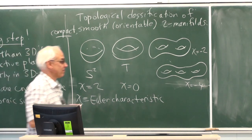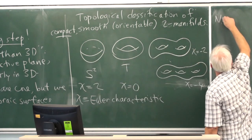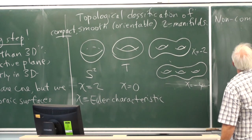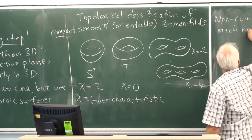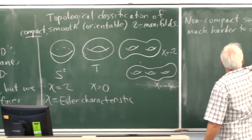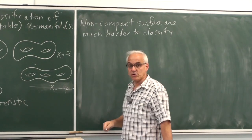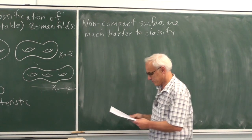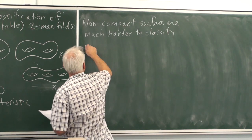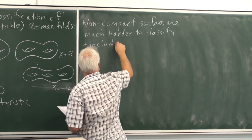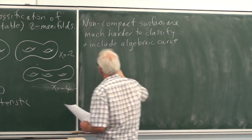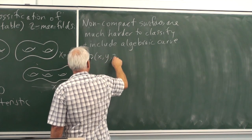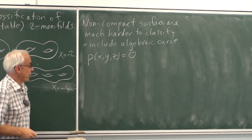Non-compact two-manifolds are much harder to classify — things that go off towards infinity are much more complicated. But they include a lot of algebraic curves; a typical algebraic curve is given by P(x, y, z) = 0, where P is a polynomial.